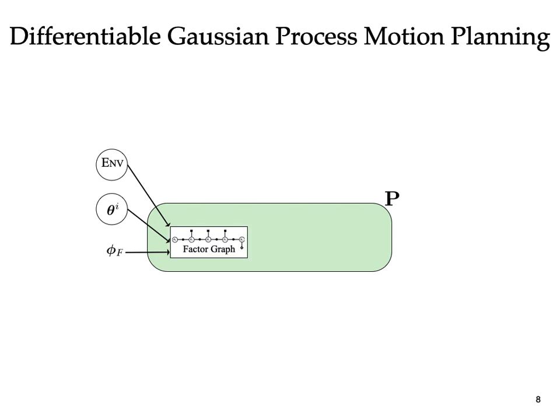It then linearizes the factor graph around theta i and solves the linear system to compute the optimal delta theta. The estimate of the trajectory is subsequently updated to theta i plus 1, which corresponds to a simple addition when using Gauss-Newton optimization.